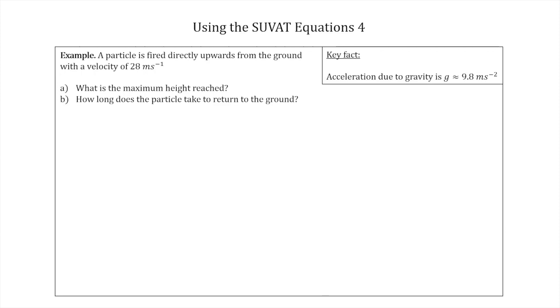So let's start doing what we always do, draw a diagram. In this problem it's a very simple diagram, we just say there's the ground, there's the particle on the ground, and we've just shown that its initial velocity is going straight up at 28 meters per second. Now which of the SUVAT variables do we know? So we always write down what we know and what we don't know.